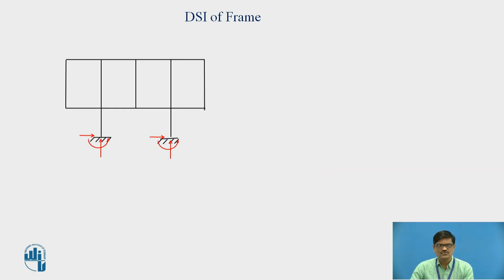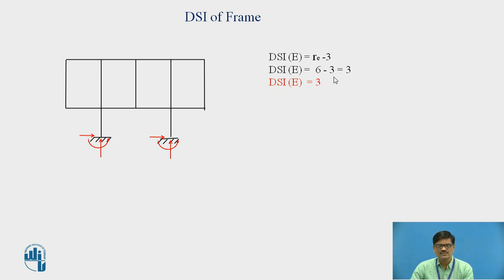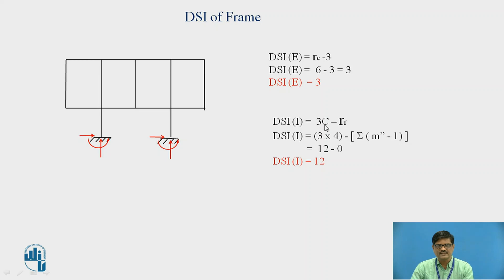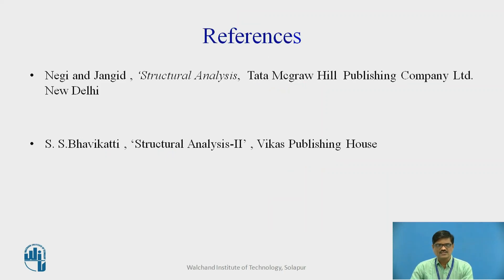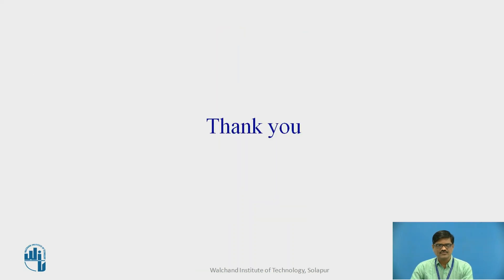Let us consider one more example with a fixed support at the bottom and the frame structure as shown. External indeterminacy = RE minus 3. We have total 6 unknown reactions and 3 equations available, so external indeterminacy = 3. Internal indeterminacy = 3C minus RR. RR will be 0 since we do not have any internal hinge. Four loops are there, so 4 into 3 = 12. DSI internal will be 12, and the total degree of static indeterminacy is 15. These are the references used for the presentation. Thank you very much.